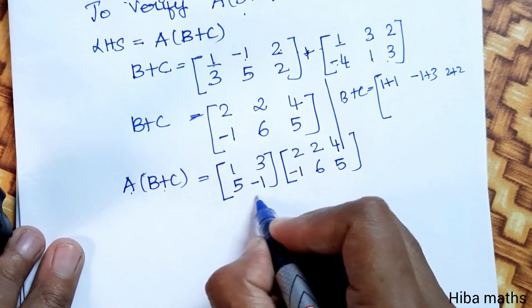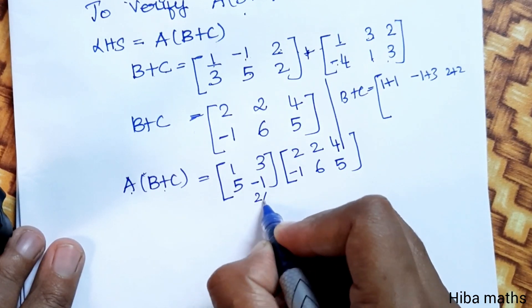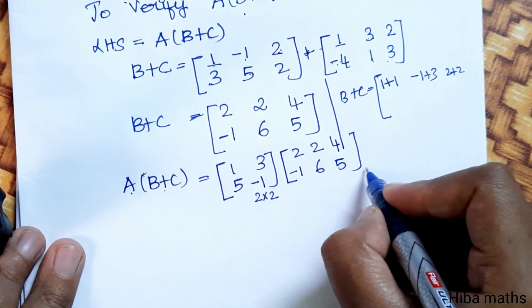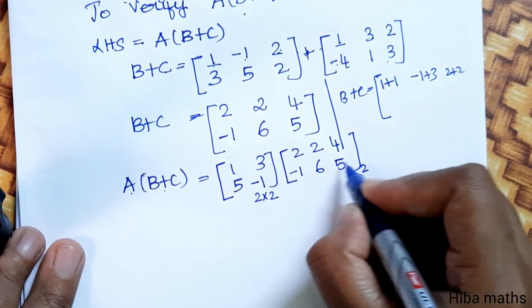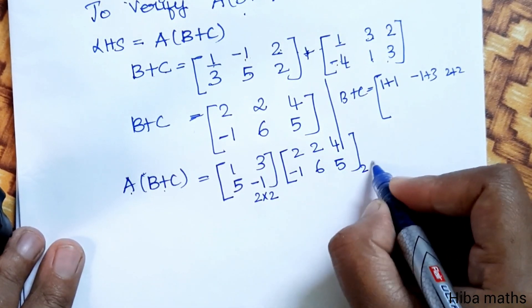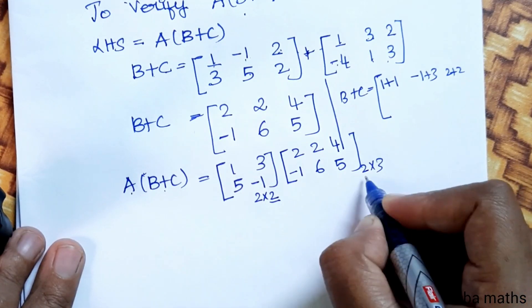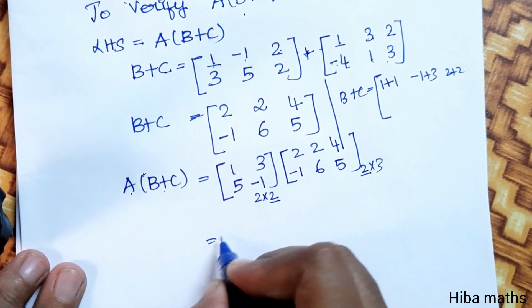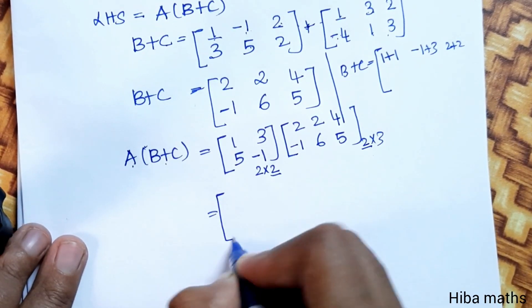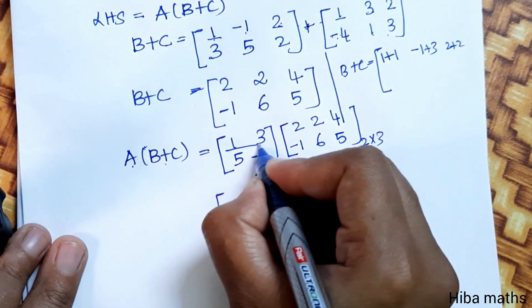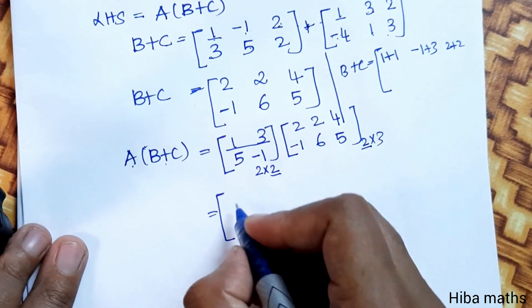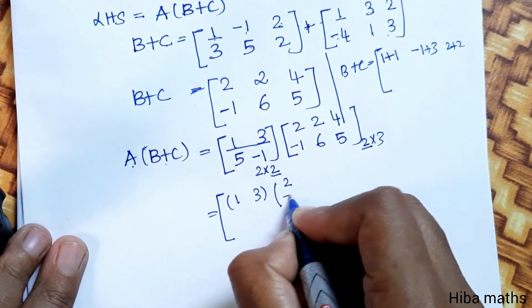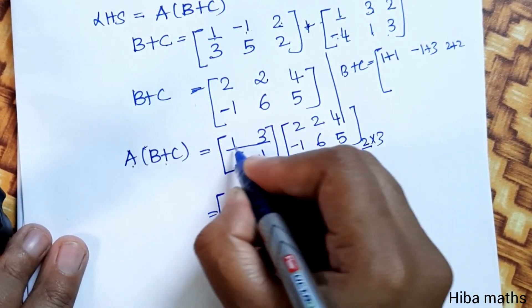The order of A is 2 by 2, and the order of B plus C is 2 rows and 3 columns. Since the inner dimensions match, we can multiply. Now we multiply A into (B+C). First row of A is [1,3], first column of (B+C) is [2,-1].